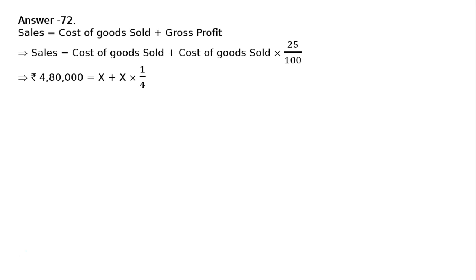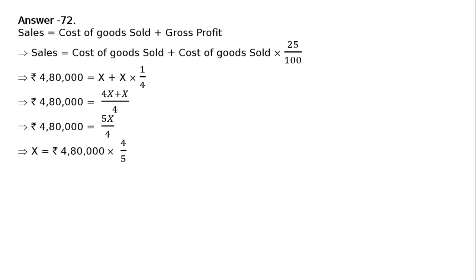Let Cost of Goods Sold equal x. Sales given is ₹4,80,000. So: ₹4,80,000 = x + x/4, which gives 5x/4. Therefore x = ₹4,80,000 × 4/5, which means Cost of Goods Sold equals ₹3,84,000.